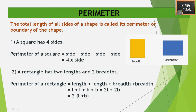For a rectangle, it has 2 lengths and 2 breadths. So you add L plus L plus B plus B, which equals 2L plus 2B, that is 2 into (L plus B).